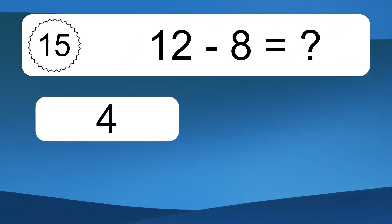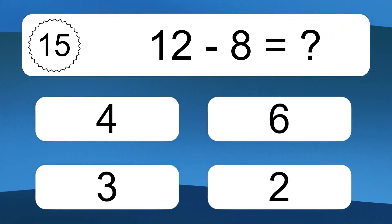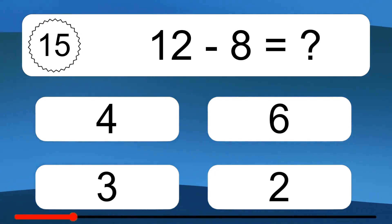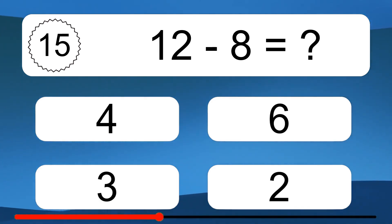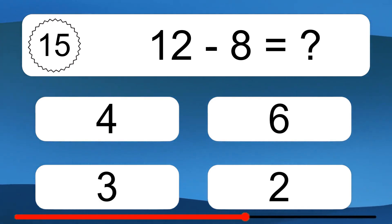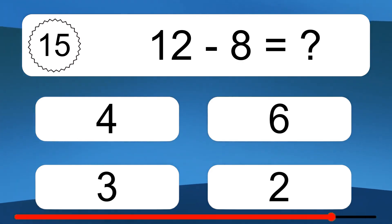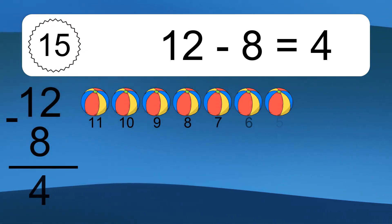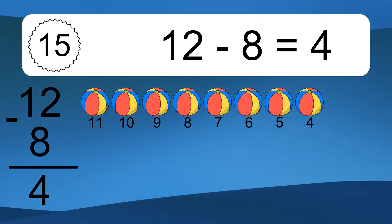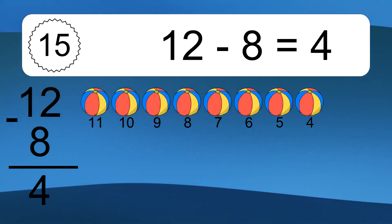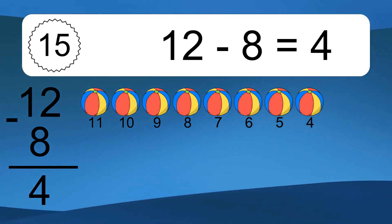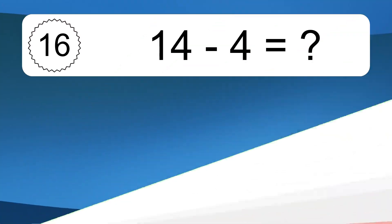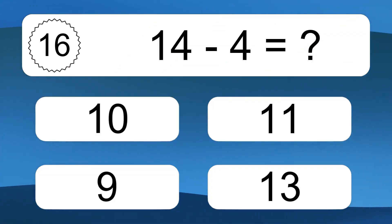12 minus 7 equals what? 12 minus 8 equals 4. Let's count it: 11, 10, 9, 8, 7, 6, 5, 4. 14 minus 4 equals what?